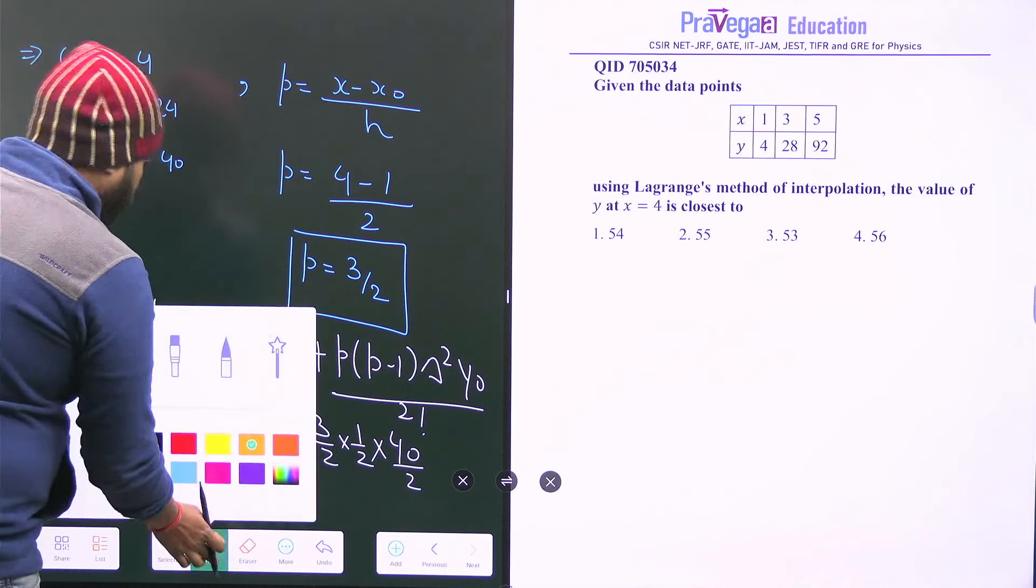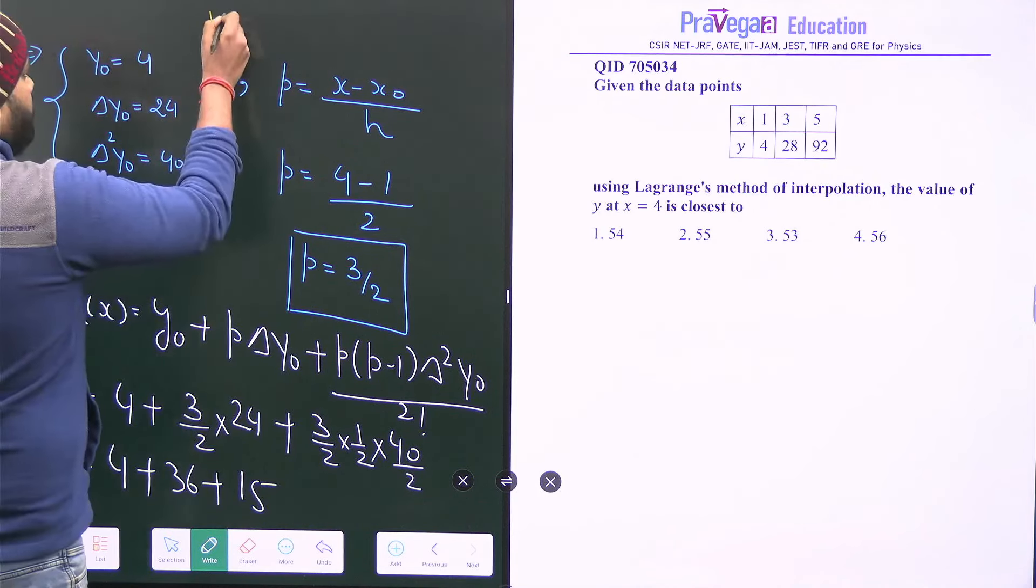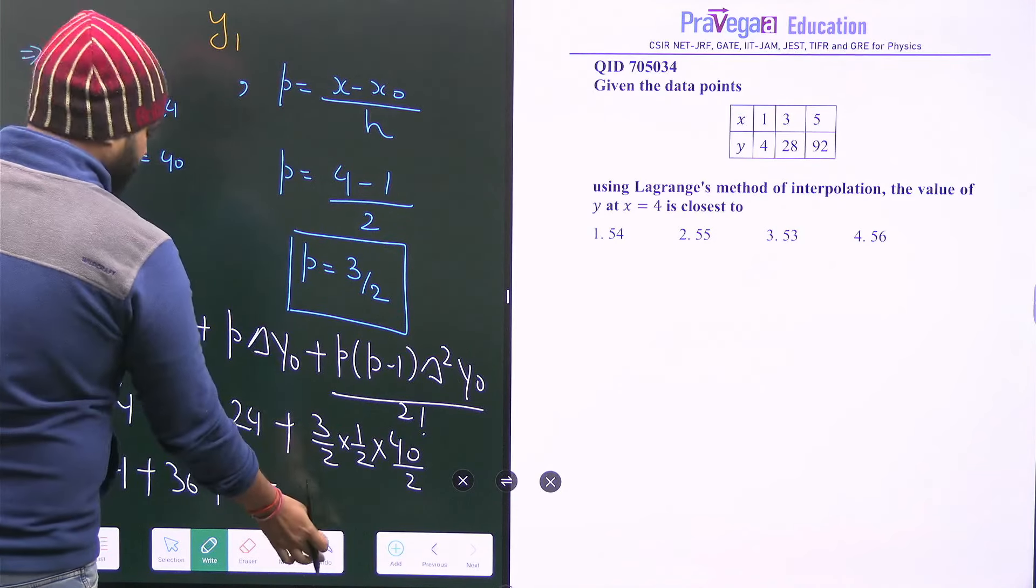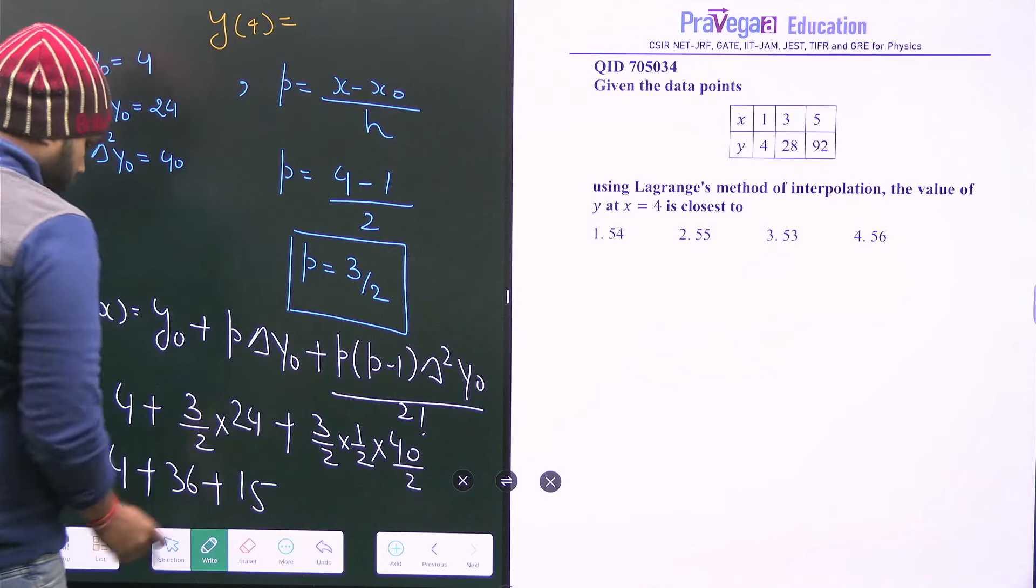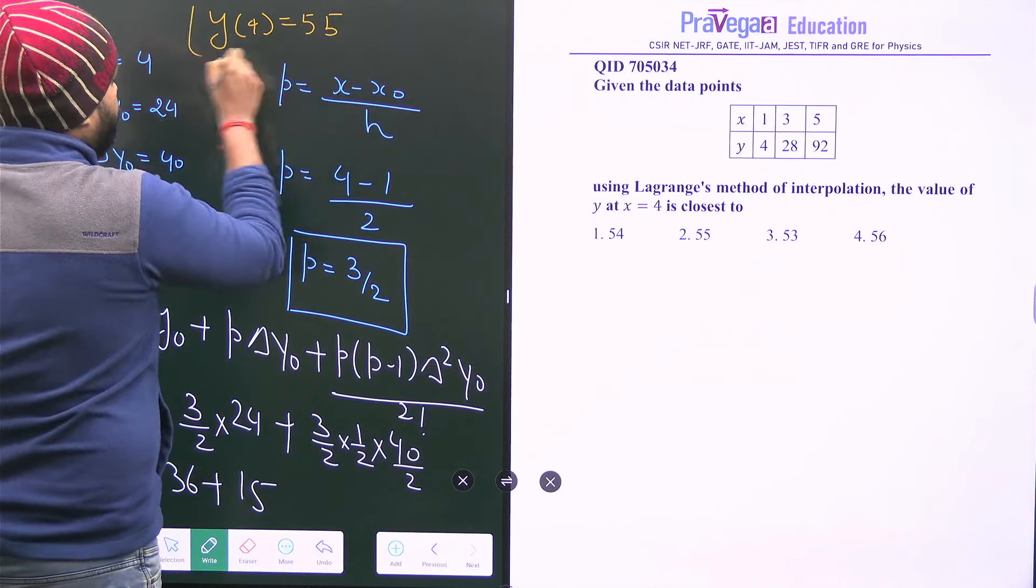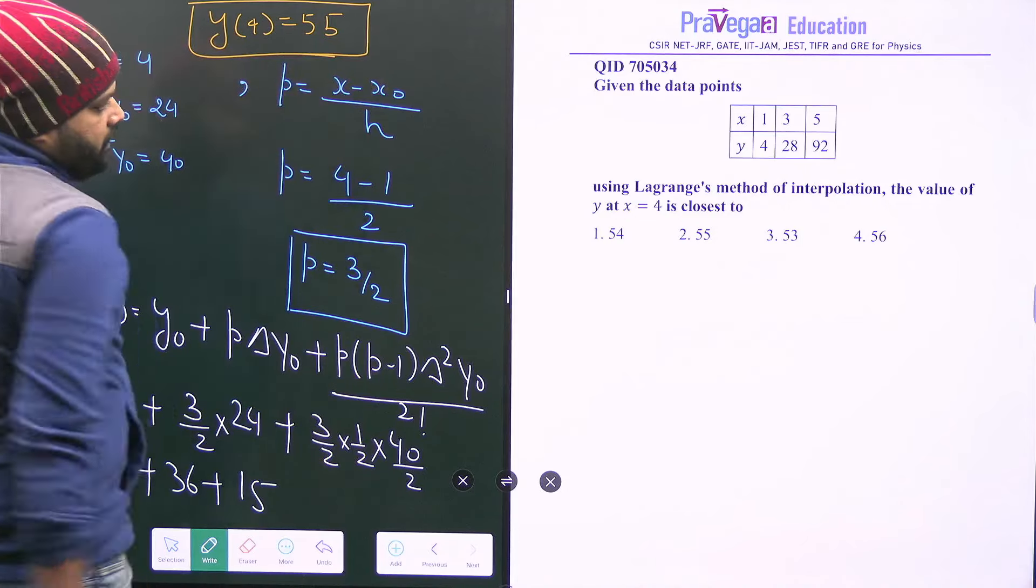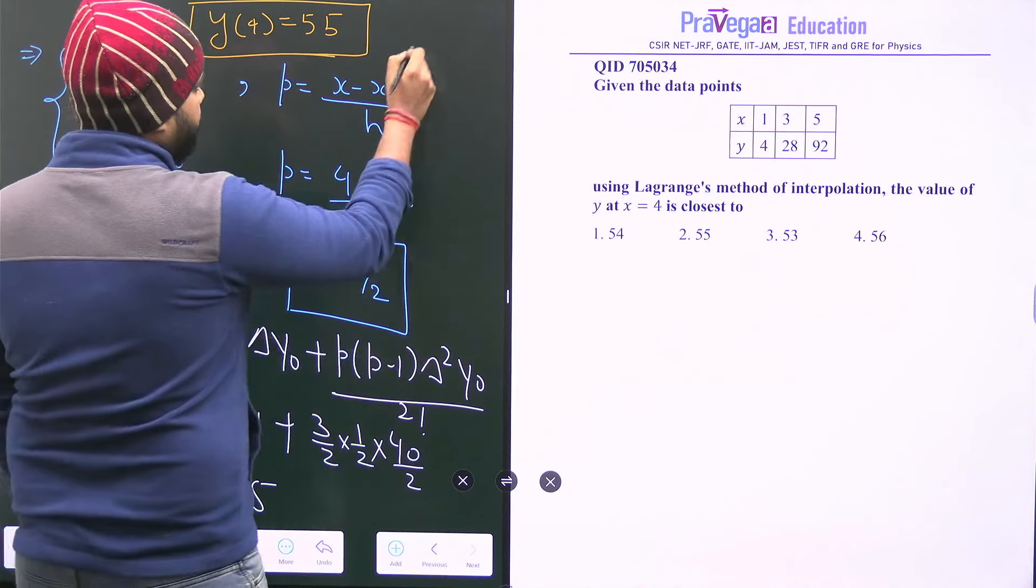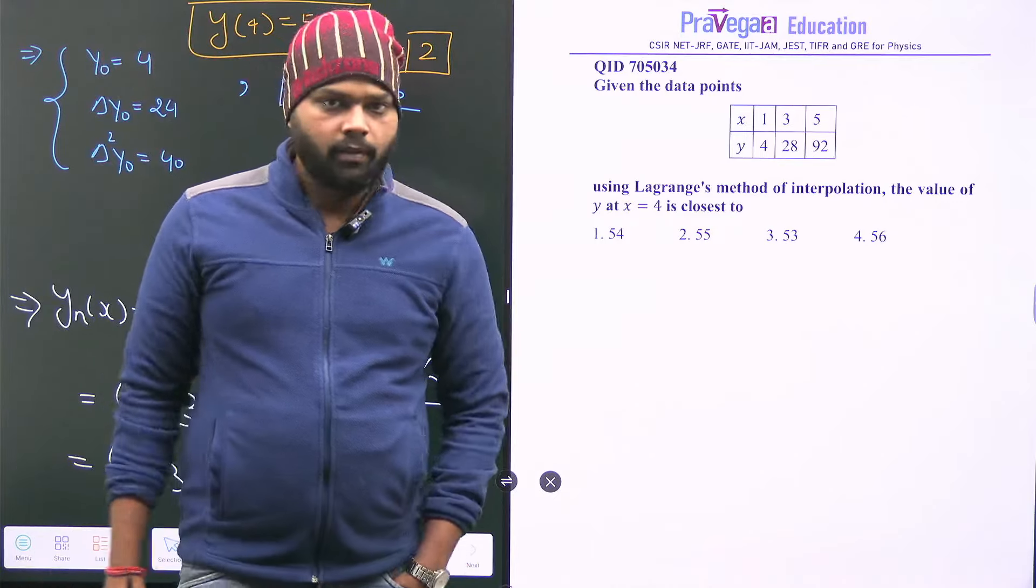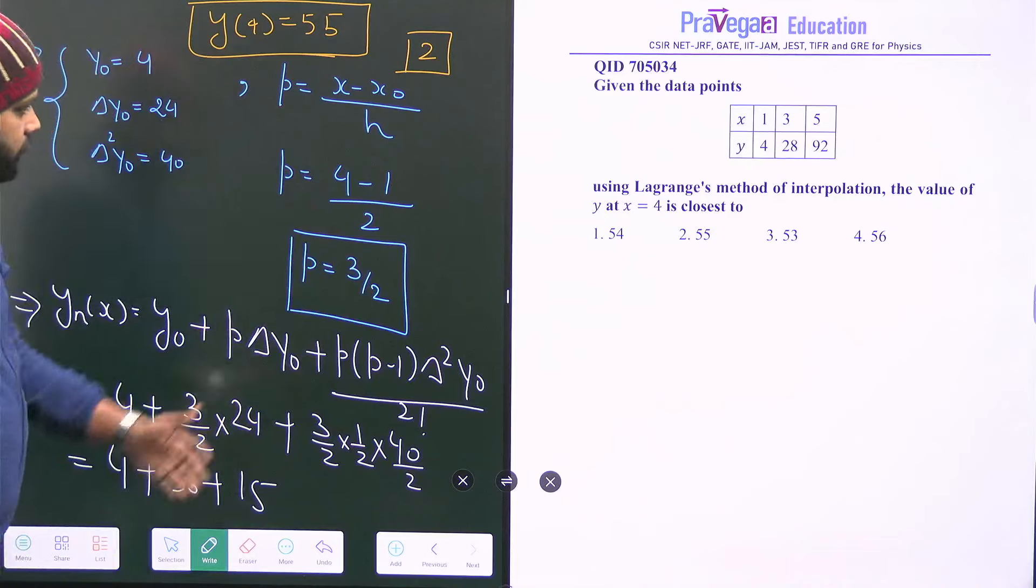So the value of y, I am writing here, the value of y at x equal to 4 is equals to how much? It is 55. 55. Which is correct? Option 2 is correct. So like this you have to solve this question. Thank you.